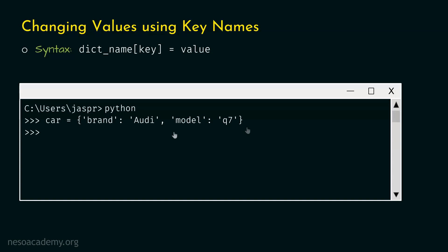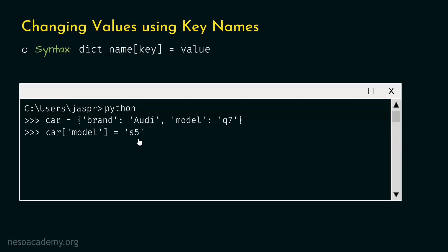Now let's hit enter. Let's say that we want to update the value Q7 to S5. For this, we can refer to its key 'model' by putting this key within square brackets. And then after the assignment operator, we can provide our new value which is S5. So we type: car['model'] = 'S5'. In this way, we can update this value to S5.